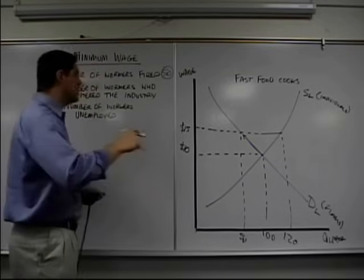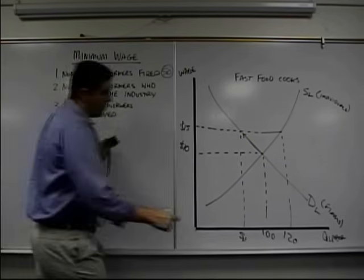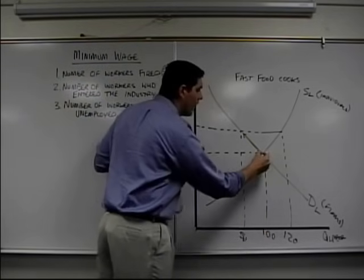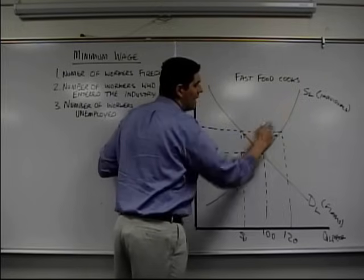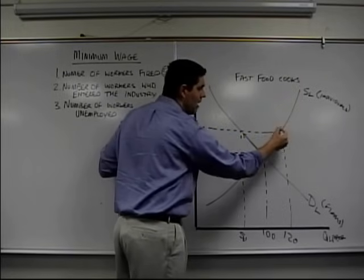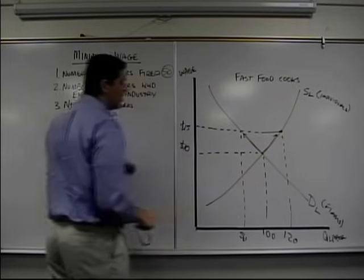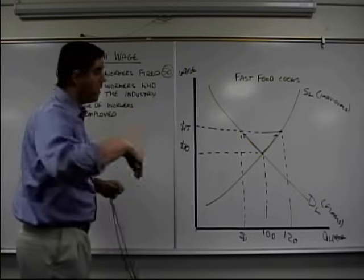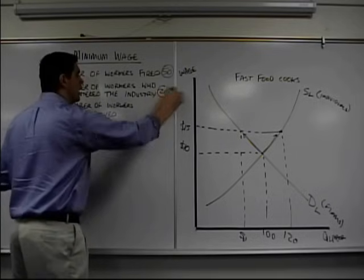How many workers jumped in? The number of workers that entered — well, we were at 100 before. When the wage increased, the quantity supplied increased. And therefore, now we had 120 people who want a job — went from 100 to 120. The answer is 20.